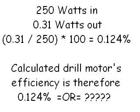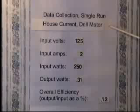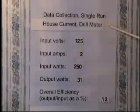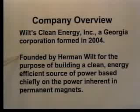If your calculations are correct and your drill motor really is 0.124% energy efficient, I suggest to you it is either on fire or it is making one hell of a lot of noise. This morning I came across a YouTube video, apparently by Herman Wilt, wherein he claimed he actually made a calculation based upon measurements of his drill motor, where he discovered that his drill motor's efficiency is 0.124. But then this genius also claims that there is, quote, power inherent in permanent magnets, unquote — which, of course, is wrong!